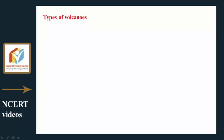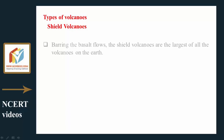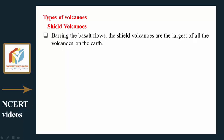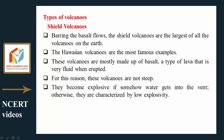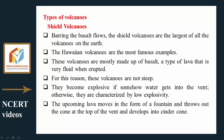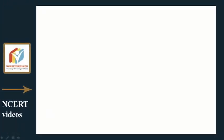Types of volcanoes — Shield volcanoes: These are the largest of all volcanoes on earth. The Hawaiian volcanoes are the most famous examples. They are mostly made up of basalt, a very fluid lava when erupted, so these volcanoes are not steep. They become explosive if water gets into the vent; otherwise they have low explosivity. The upcoming lava moves as a fountain, throwing out material to form a cinder cone at the top of the vent.